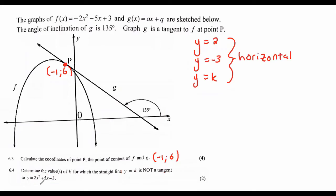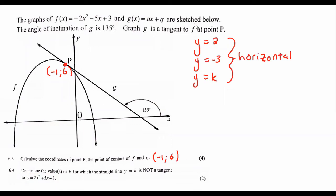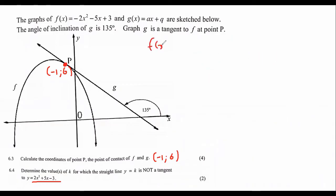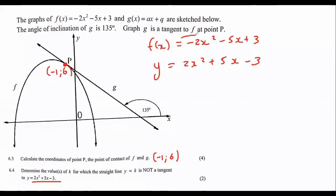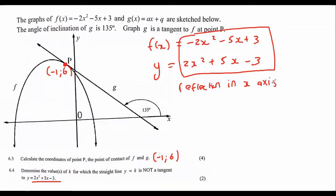I actually didn't pick up on this either — can you see that this equation here is the complete opposite of this one over here? They have reflected it in the x-axis. So we were given F(x) equals minus two x squared minus five x plus three, but now they have given us y equals two x squared plus five x minus three. That is a reflection in the x-axis.